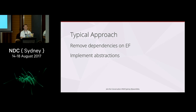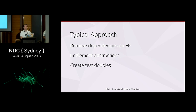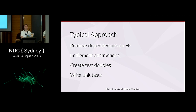The next thing we do is implement some abstractions — typically the unit of work and the repository pattern. Following that, we have to create test doubles first; these are dummy objects we use to test our system. So we'll typically create a dummy unit of work and a bunch of dummy repositories. And then finally we can write unit tests.